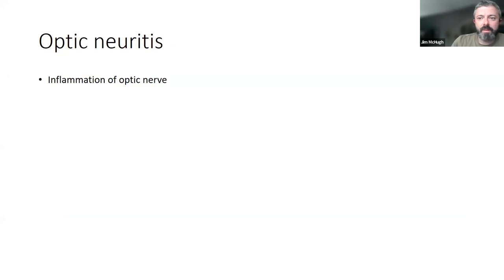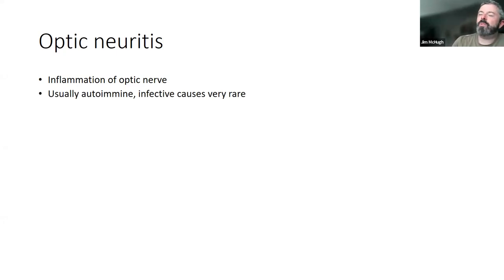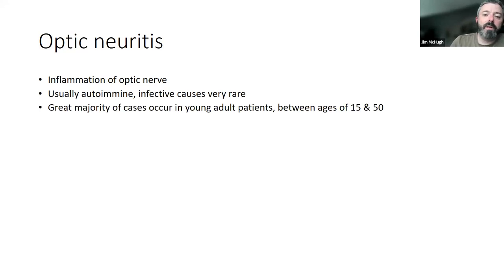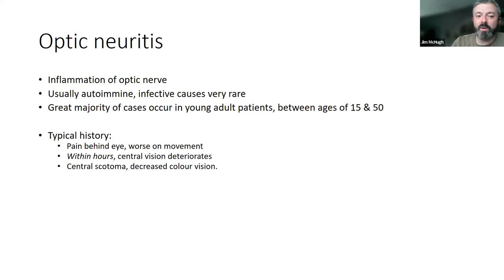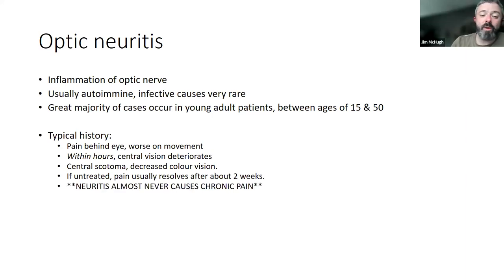Optic neuritis — that's inflammation of the optic nerve. 99% of optic neuritis is autoimmune. It's characteristically younger patients: over age 50 AION is common, under age 50 neuritis is common. Typically they start getting pain behind their eye, and because the optic nerve sheath is tender, it hurts to look around in different directions. Within a few hours their central vision starts getting worse — they get a central scotoma and altered colour vision. The pain typically lasts about a couple of weeks then disappears of its own accord. It doesn't go on grumbling for months and years — if somebody has pain for months or years, it isn't neuritis.